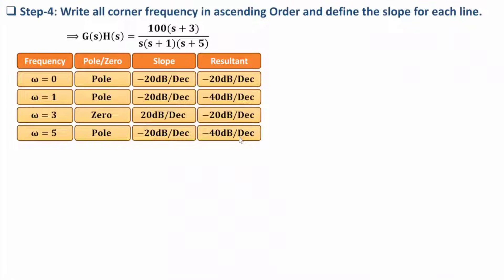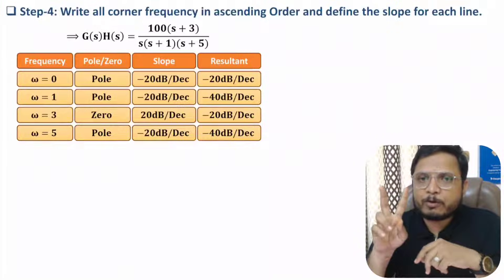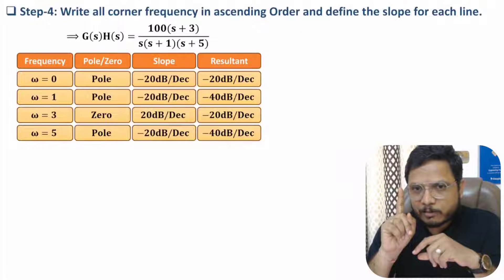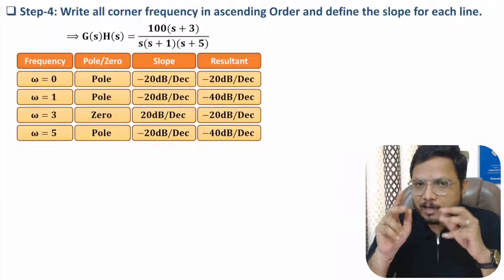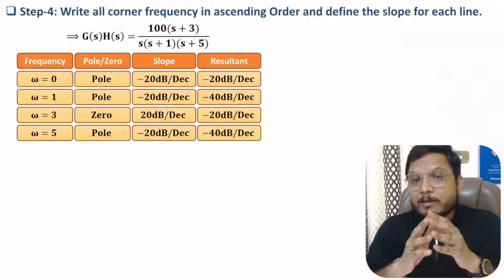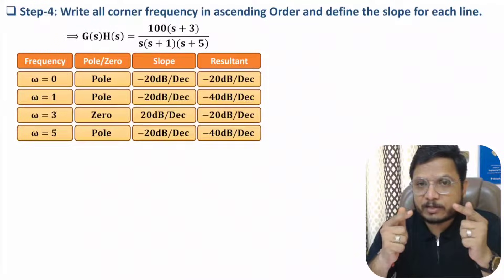Once we make this table we can plot the gain plot. One should know that in Bode plot there are two different plots: one is the gain plot and the second is the phase plot. The gain plot procedure is what we have done; for the phase plot, based on the transfer function we need to identify the phase equation.